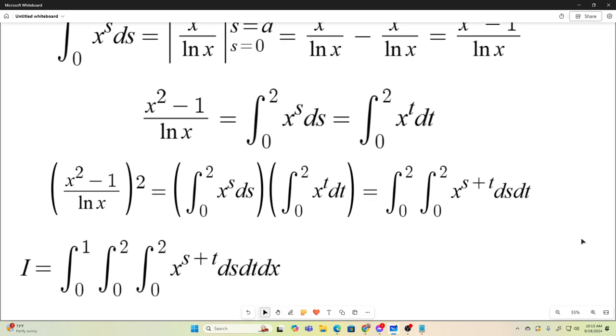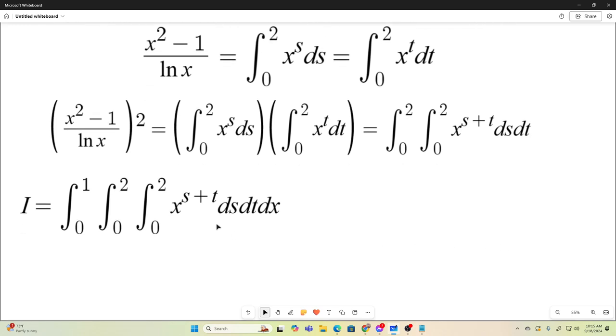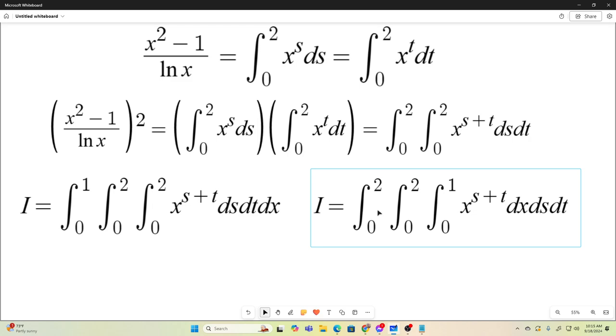Now, x to the s plus t, you can evaluate this with respect to any one of these variables over any one of these intervals. So we can rearrange this however we want, as long as we integrate over the correct bounds with respect to the variable. But we're going to rearrange it like this. We will let x be the first thing we integrate with respect to. Therefore, we change the inner integral to the interval 0 to 1.